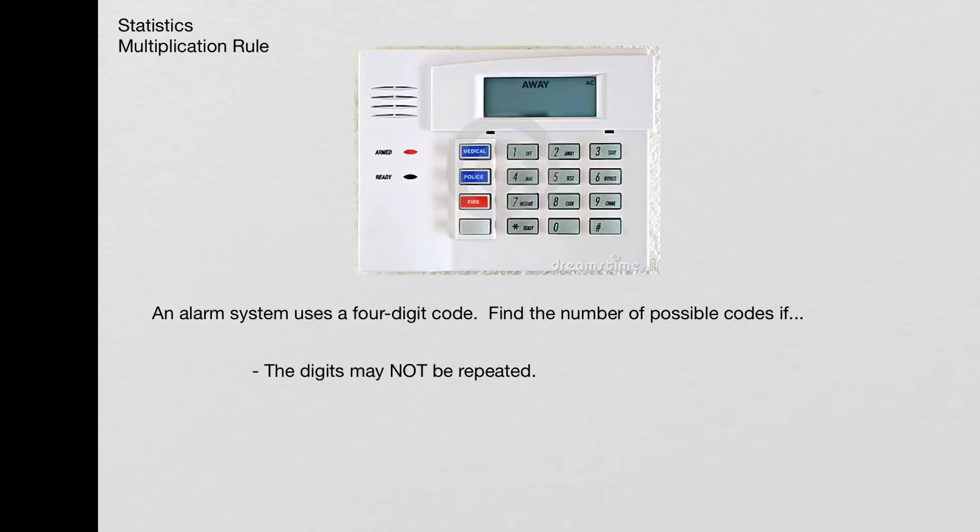Next, let's look at what will happen if the digits may not be repeated. So again, there's four digits in the code, so I'll make my four blanks. And the first digit can be anything from zero through nine, so there's ten possibilities there again. Now the second digit can be anything except for whatever it was that we got for the first one, so there are only nine possibilities now.